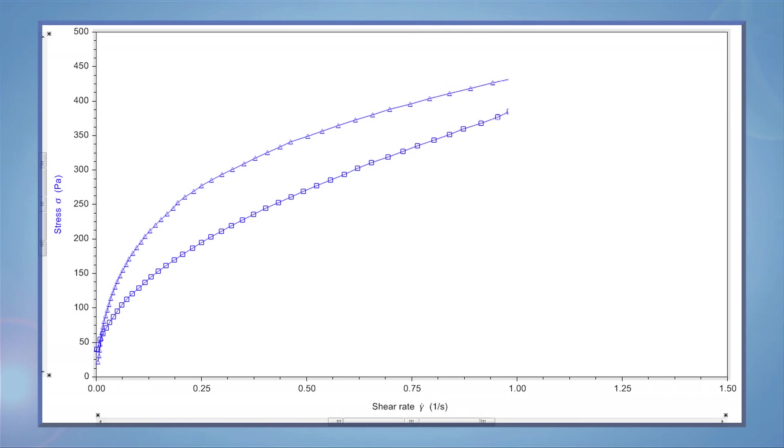However, if there is any thixotropy, the second curve will lag behind the first curve as the sample rebuilds its viscosity, creating a hysteresis.